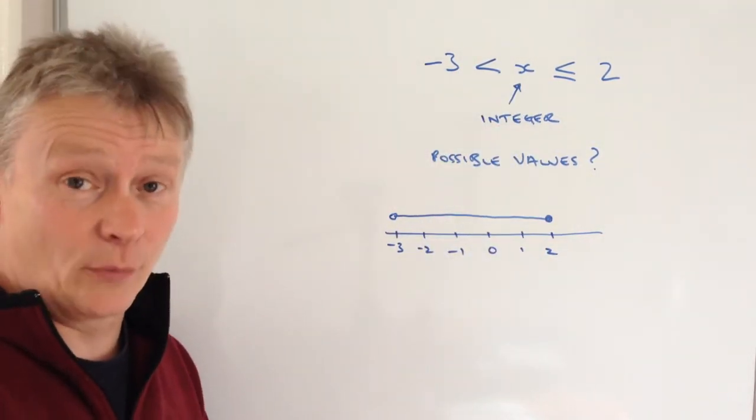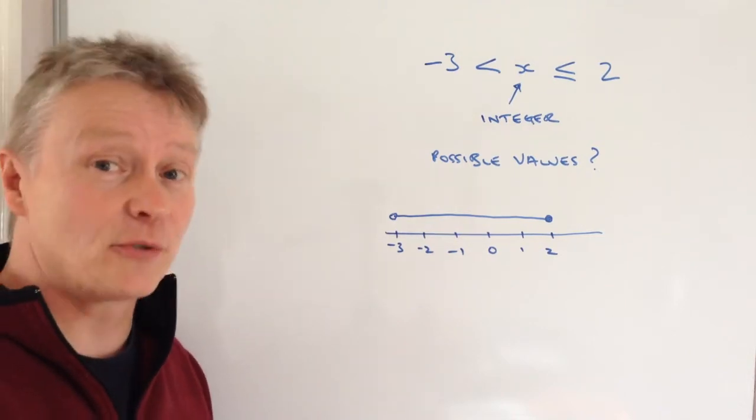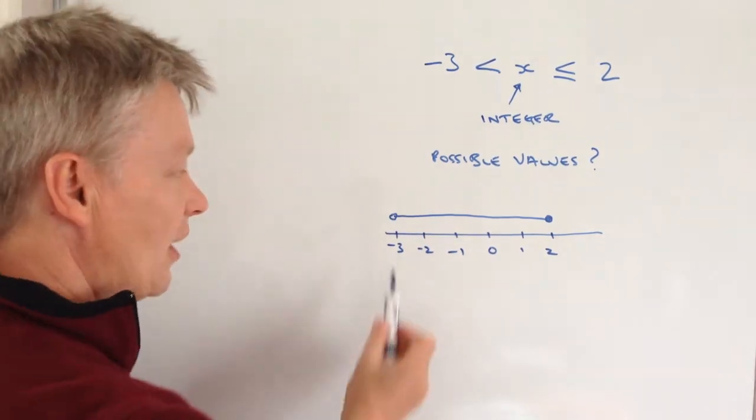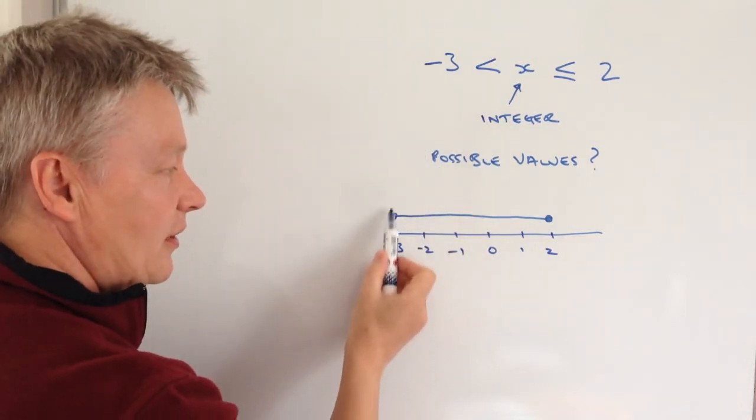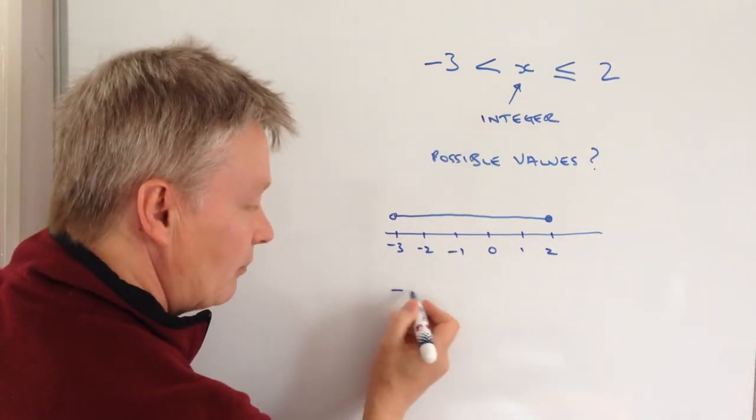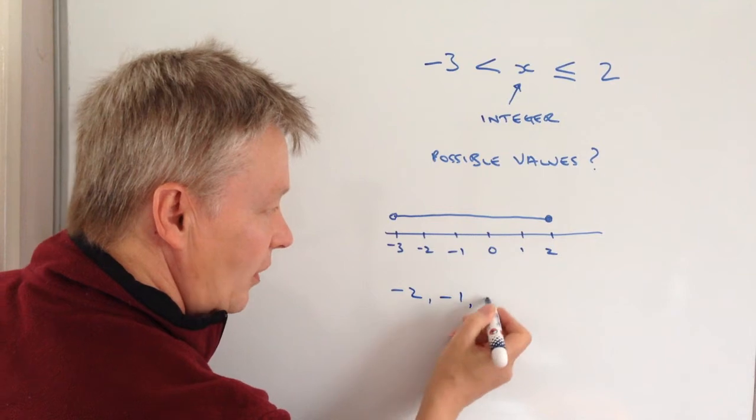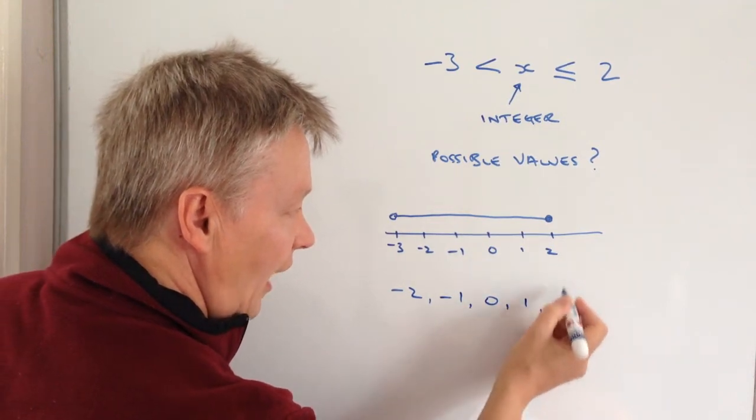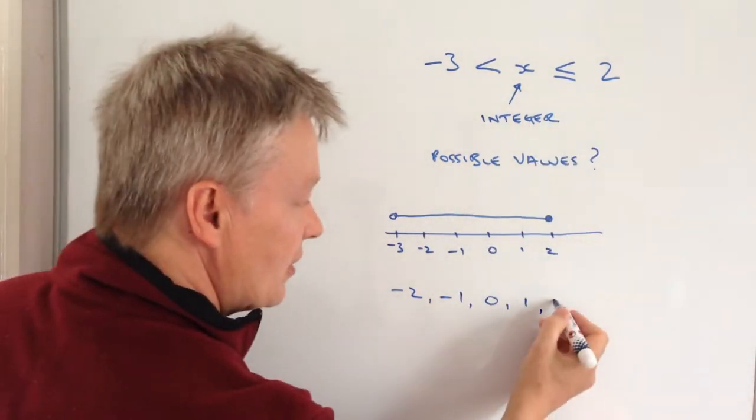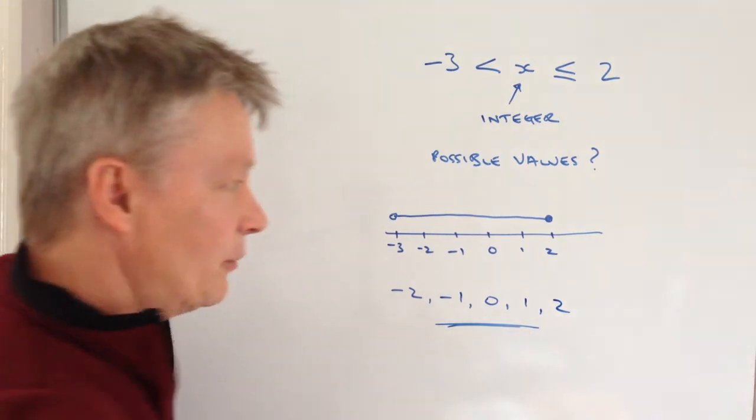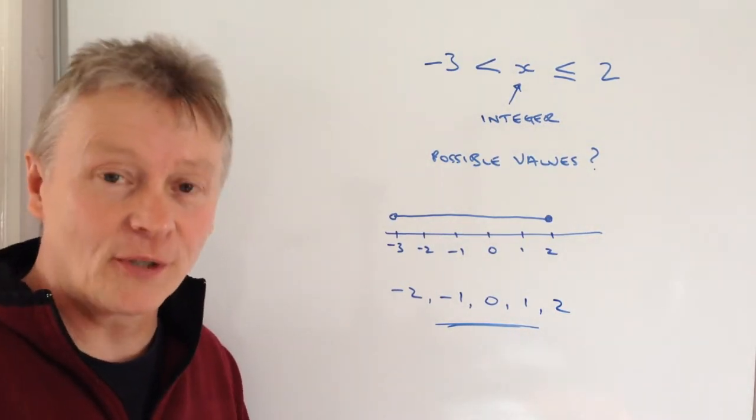Then it's just a case of writing down the actual values themselves. It's greater than -3, so it won't include -3, but it will include -2, -1, 0, 1, and 2 because it's less than or equal to 2. And that would be the answer to this question.